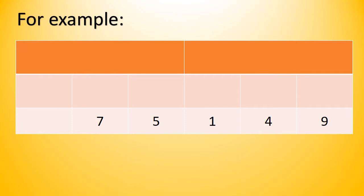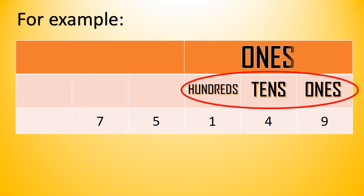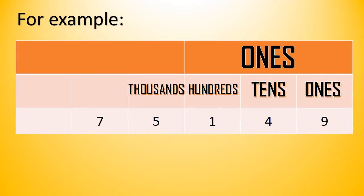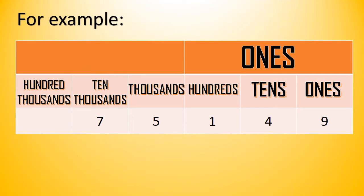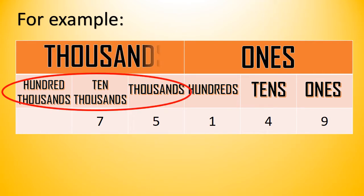For example, the first 3 digits from the right — the ones, tens, and hundreds digits — are grouped in what we call the ones period. The next 3 digits — the thousands, tens, and hundreds digits — are grouped in the thousands period.